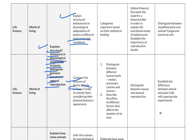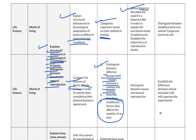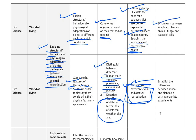For basic level, questions are on categories of organisms based on their method of feeding. Students distinguish between different human teeth and describe the effect of different factors that affect the weather of an area. For proficient level, students define puberty and describe the need for a balanced diet to explain the nutritional needs of adolescents. They establish the importance of reproductive health and distinguish between sexual and asexual reproduction. For advanced level, questions distinguish between plant, animal, fungal and bacterial cells.